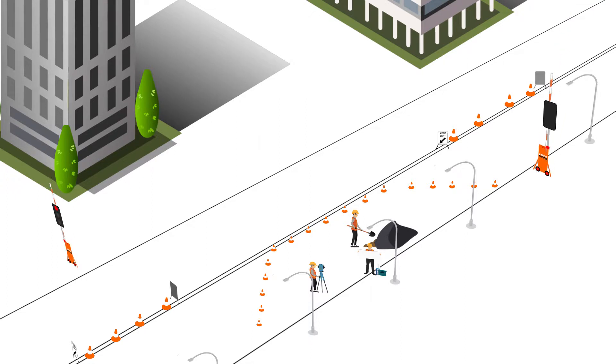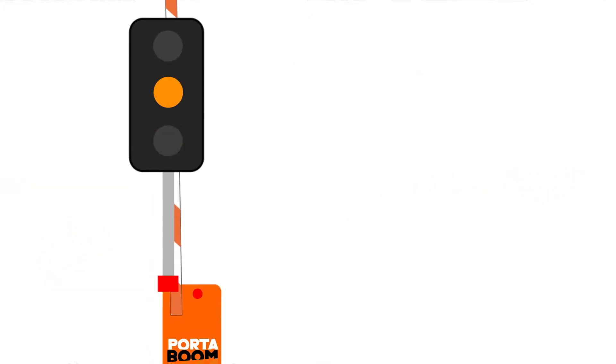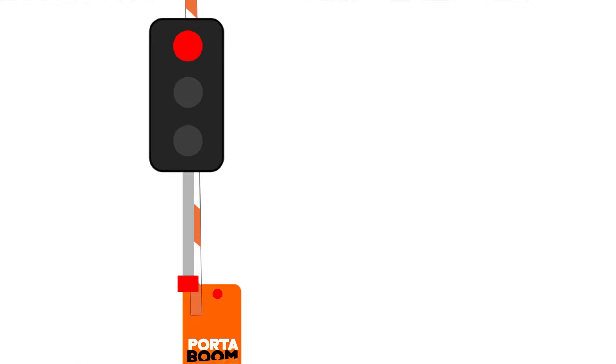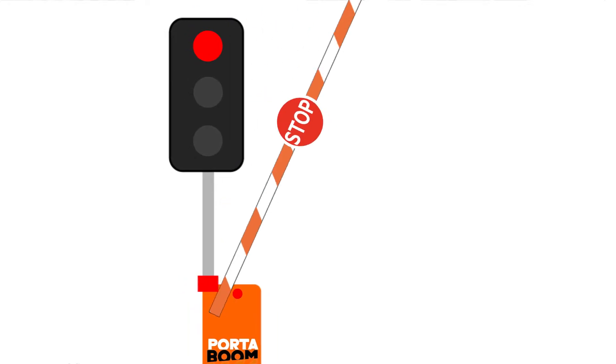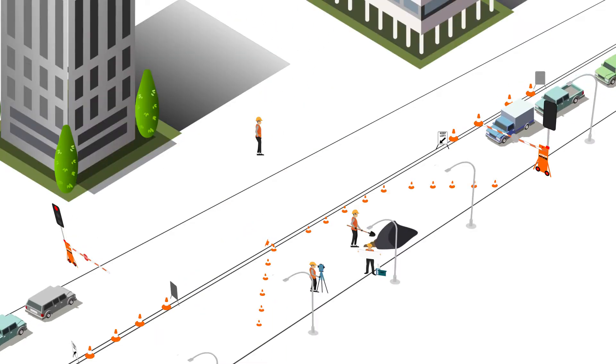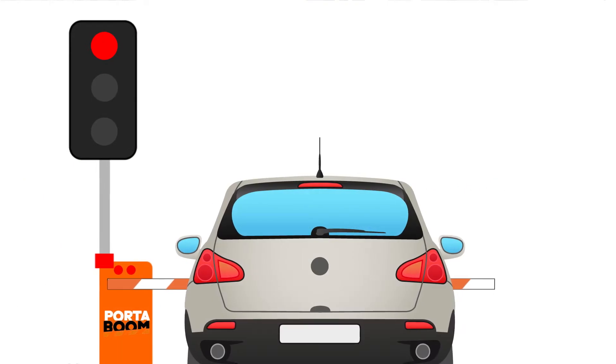Standing in the safe zone, the traffic controller activates the remote control to stop the traffic. The traffic light changes from green to amber, then red. After approximately 3 seconds, the boom arm lowers, securing the work zone and providing a physical barrier.